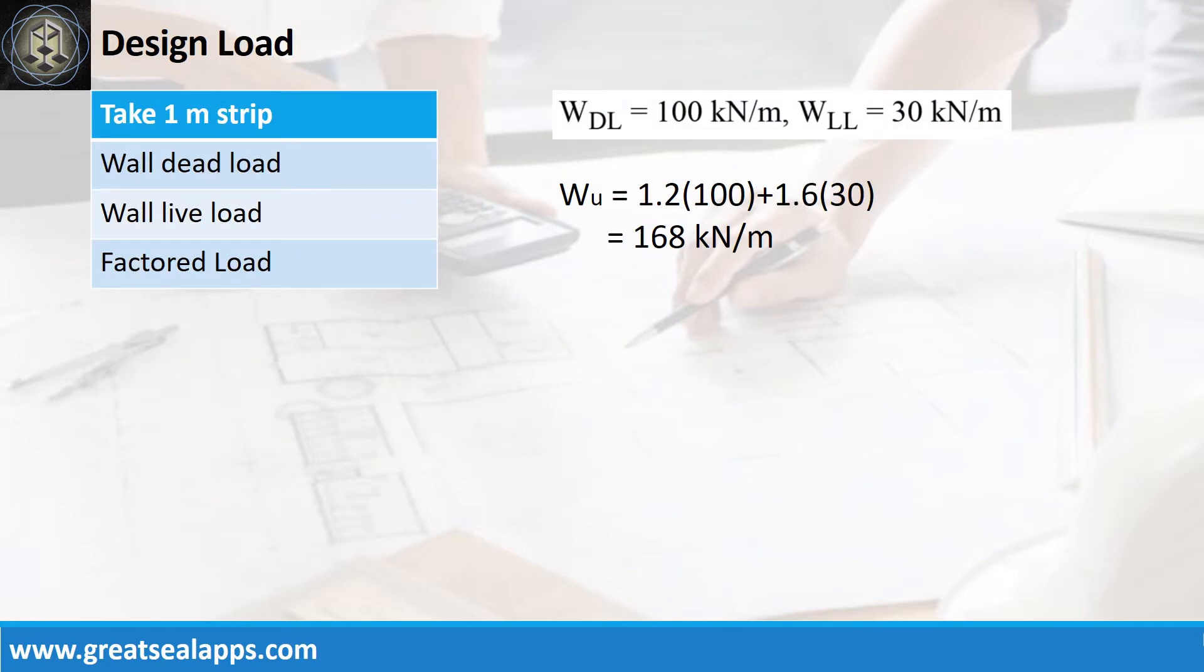The wall footing carries a uniform dead load of 100kN per meter and uniform live load of 30kN per meter for a factored uniform load of 168kN per meter.